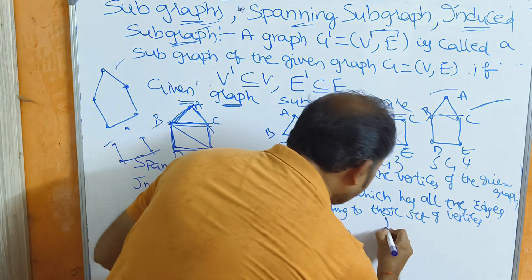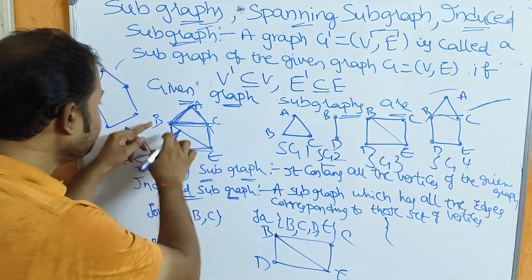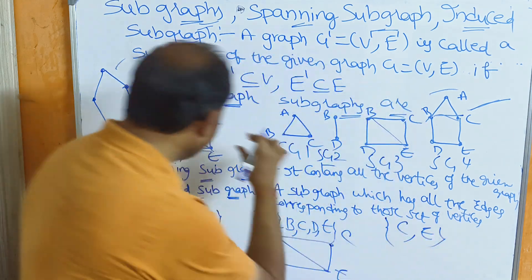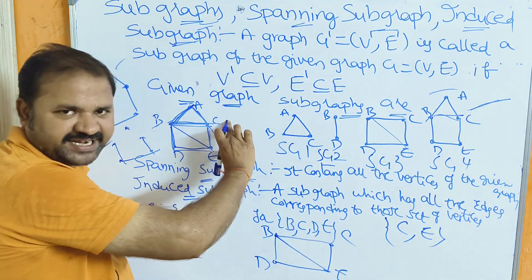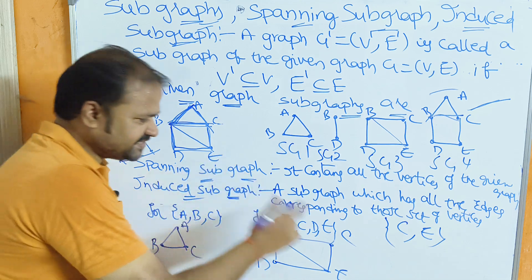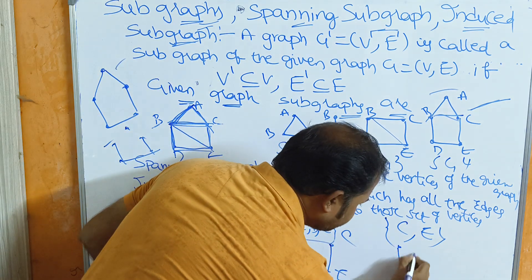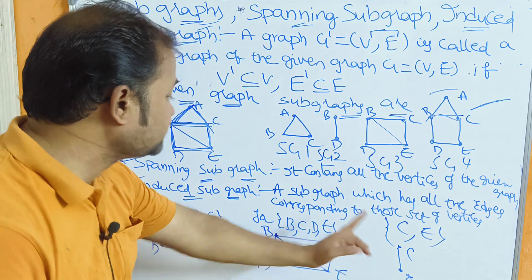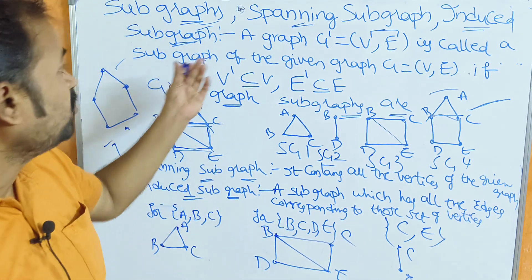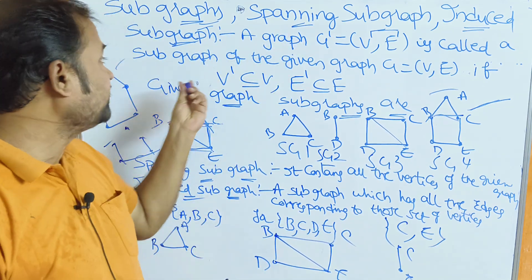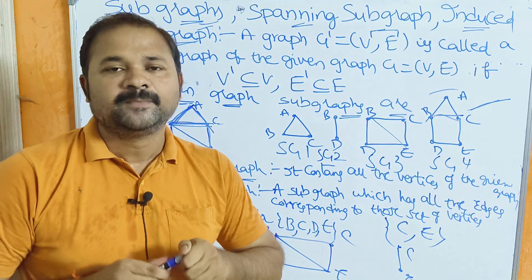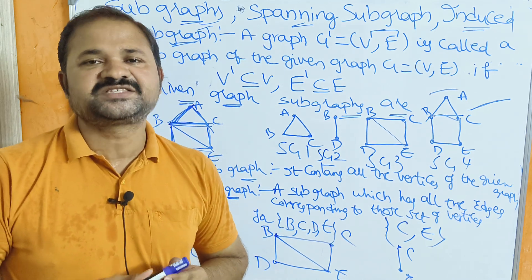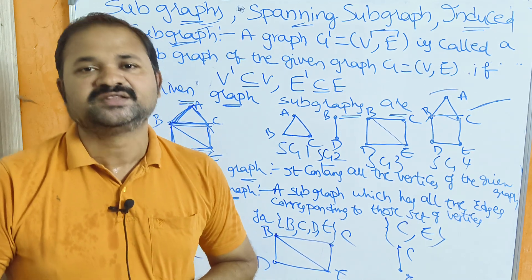Likewise, if we take the induced subgraph for vertices {c, e}, we have only one edge corresponding to those vertices. This is the induced subgraph for vertices c and e. This concludes the discussion of subgraph, spanning subgraph, and induced subgraph. Please like the video, subscribe to the channel, and share it with your friends.